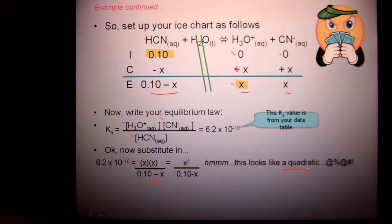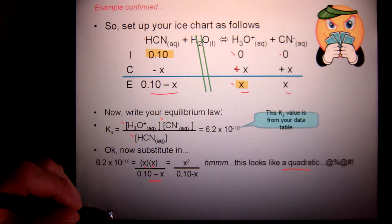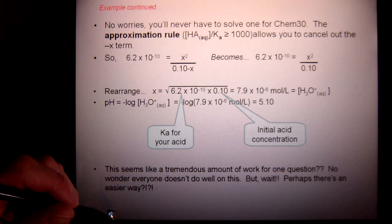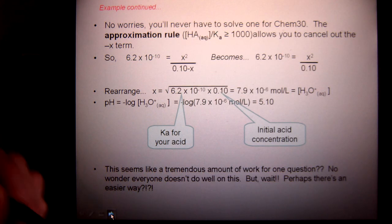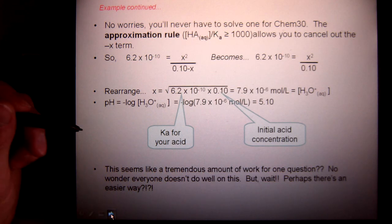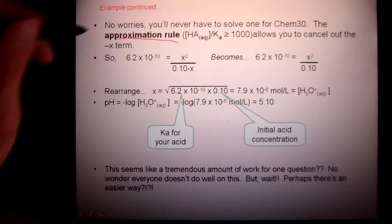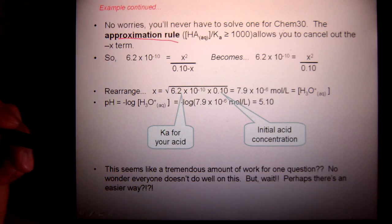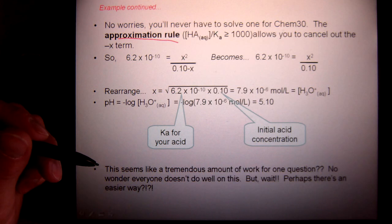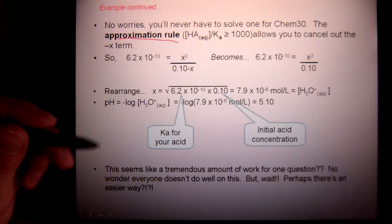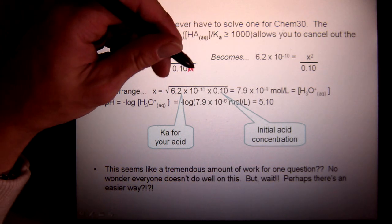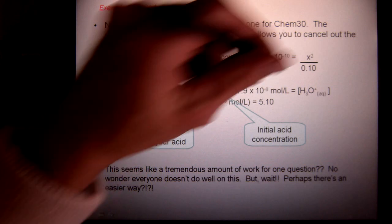Well, fortunately, you'll never have to solve a quadratic in Chem 30. So, there must be a shortcut. At the bottom of your acid-base table, you'll see a little note referring to an approximation rule. Basically, it says, if your K value is so small, relative to your concentration, then you can get rid of this minus x term. Okay? And be left with that.